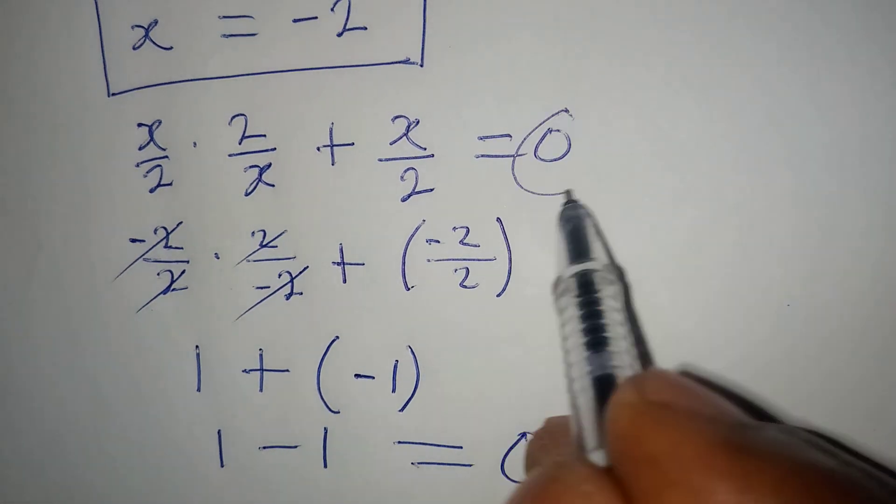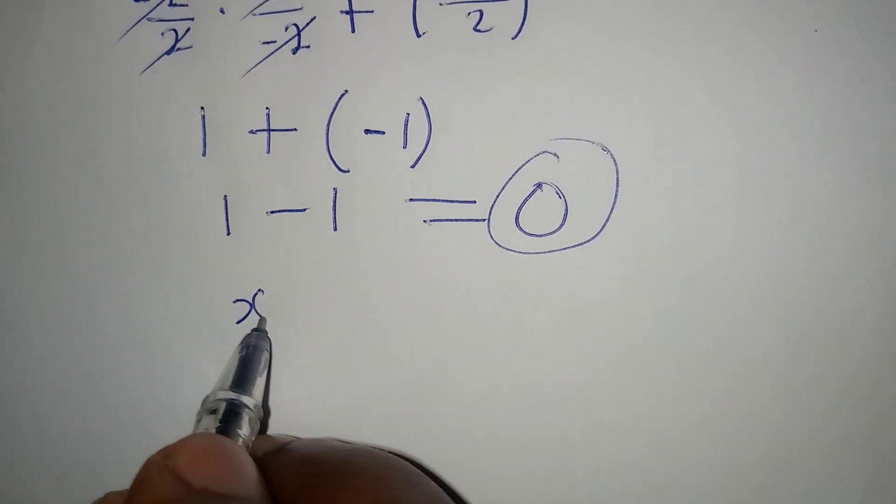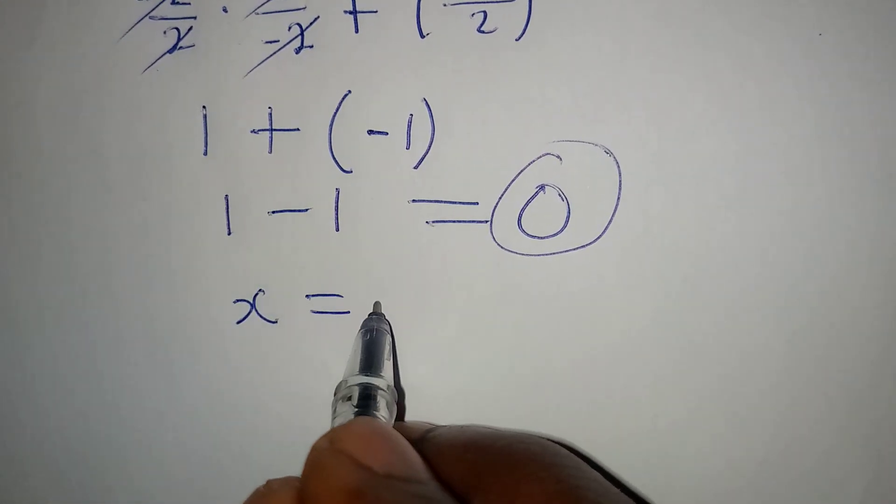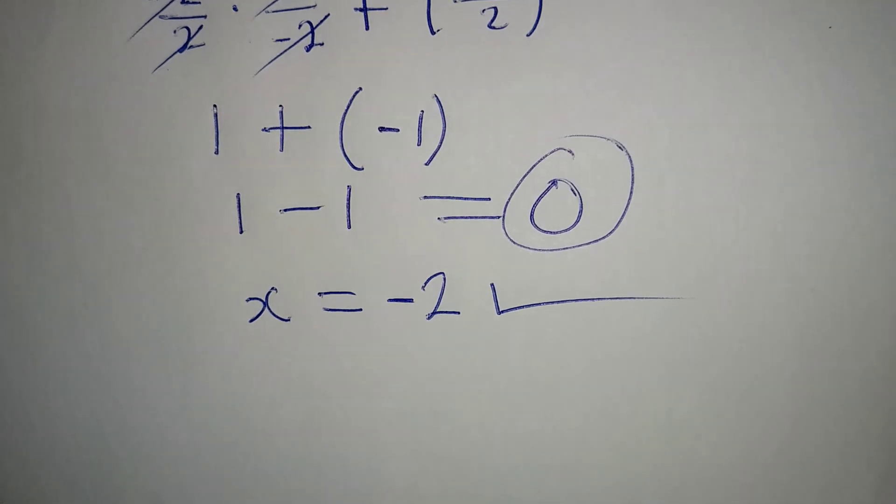And on the right hand side we are having 0, and 0 is also here. So this is to confirm that x to be equal to minus 2 is very correct. Thank you for watching.